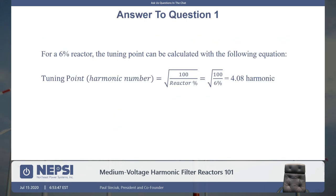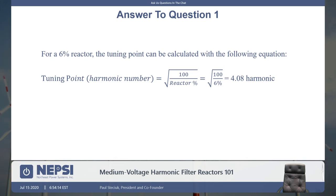For a 6% reactor, the tuning point can be calculated with the equation: tuning point equals the square root of 100 divided by the reactor percent. So the answer is the 4.08 harmonic. What does 6% mean? 6% of the capacitive reactance will equal the inductive reactance — that's what it means. Knowing the inductive reactance allows you to calculate the tuning point. It's also about equal to the voltage drop across that reactor line-to-neutral — 6% — but not exactly; remember it's N-squared over N-squared minus one.